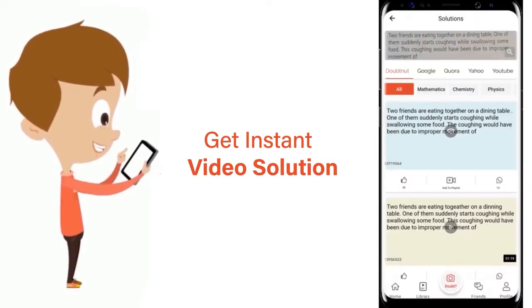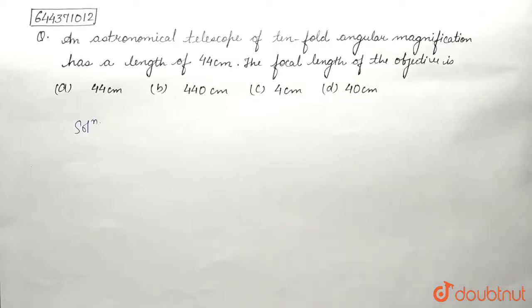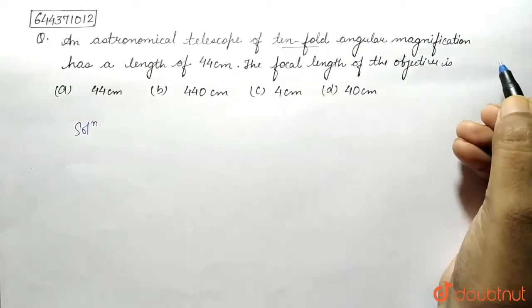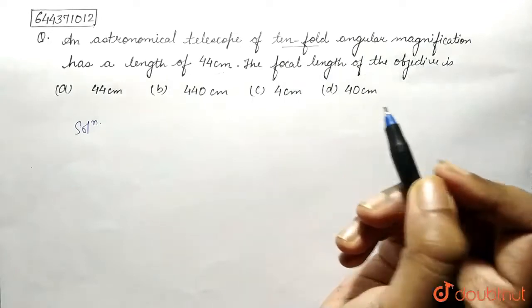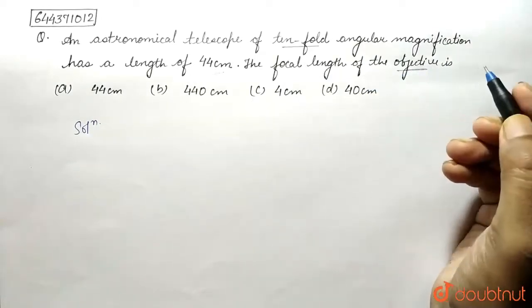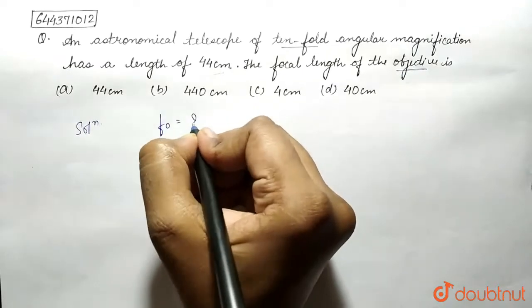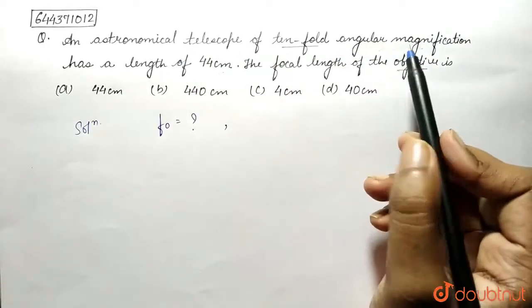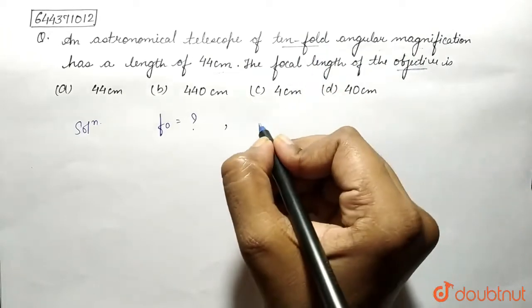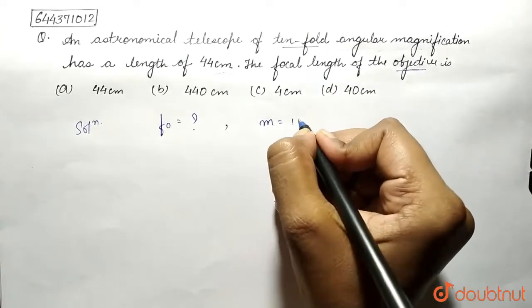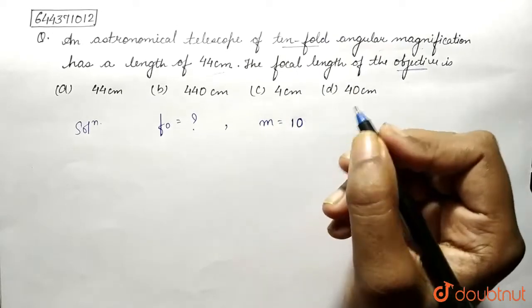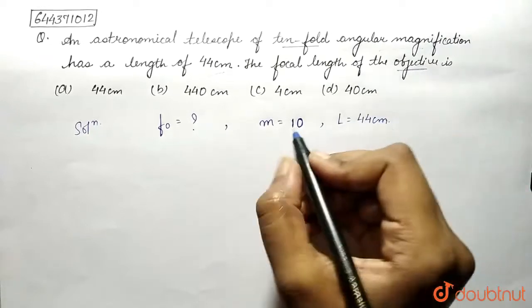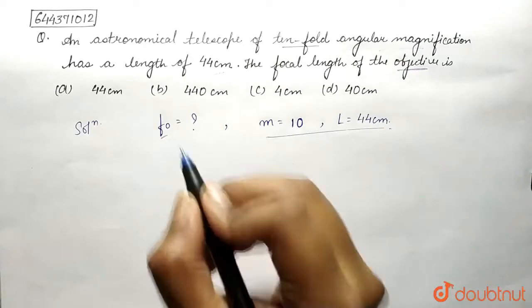The question: an astronomical telescope of 10-fold angular magnification has a length of 44 centimeters. Find the focal length of the objective. We have been provided that the angular magnification is 10-fold, so the magnification value is 10, and the length is 44 centimeters. With these two values, we need to find the focal length of the objective.